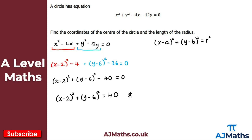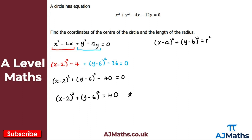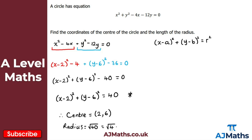Now we can identify the center and radius. The center is (2, 6) — the sign changes, so x minus 2 gives positive 2, and y minus 6 gives positive 6. For the radius, r squared equals 40, so r equals the square root of 40, which simplifies to 2 root 10.